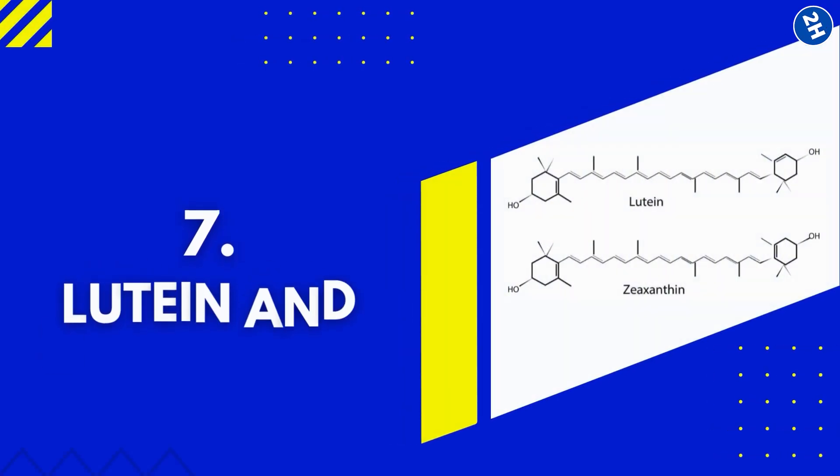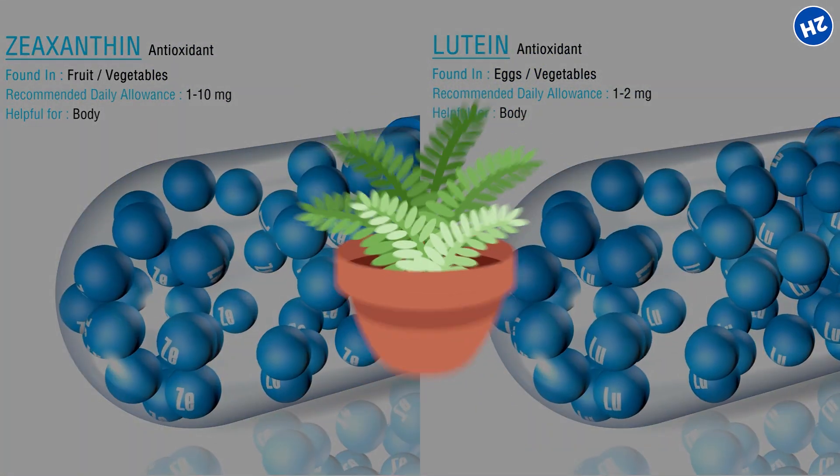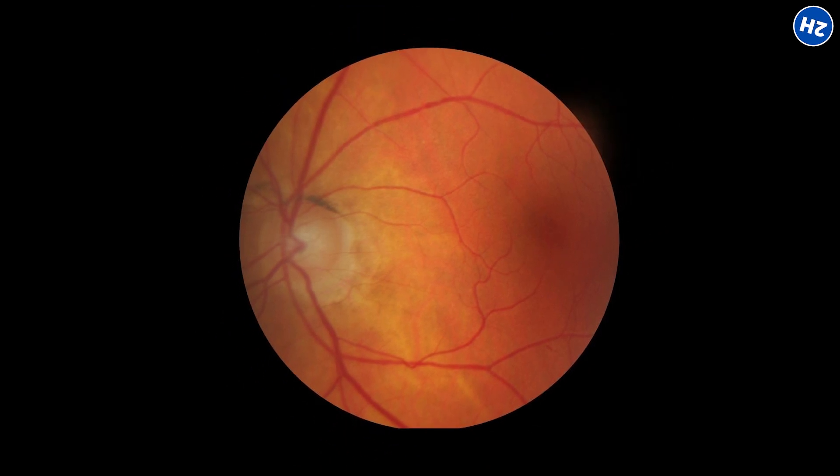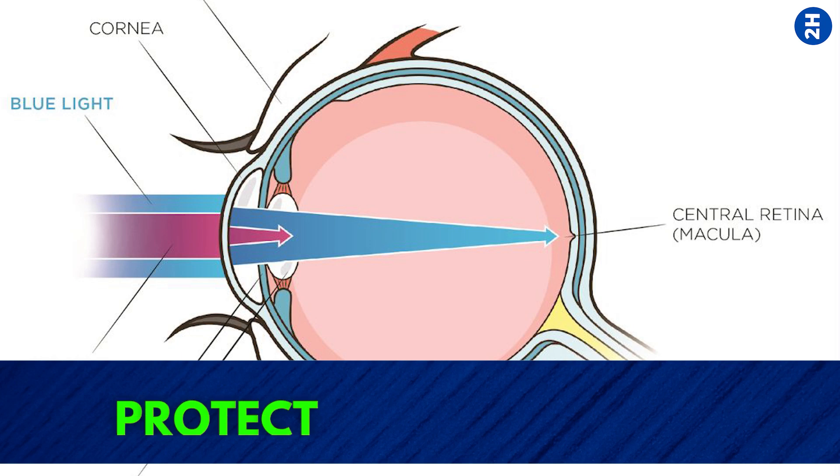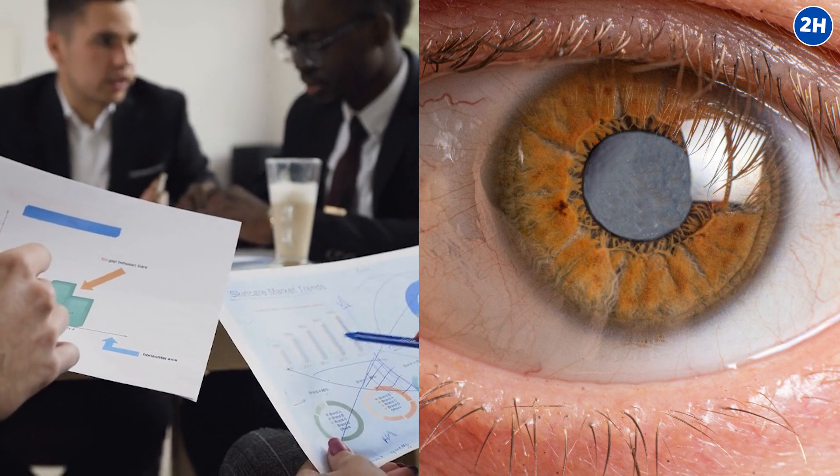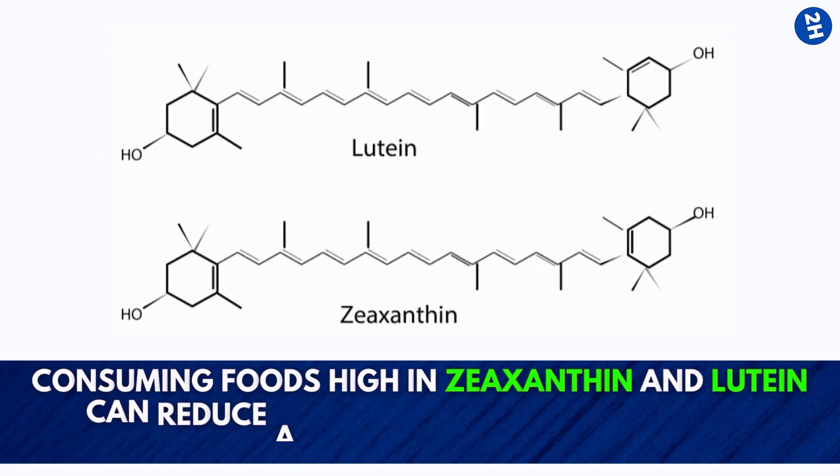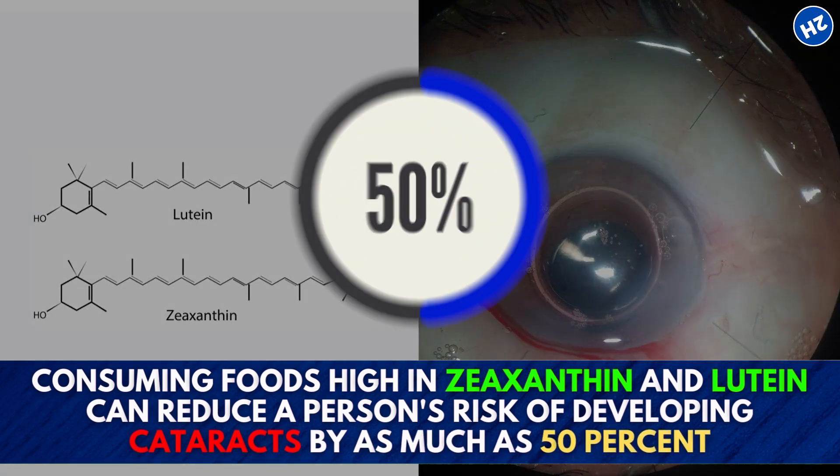Number 7. Lutein and zeaxanthin. Zeaxanthin and lutein are two of the beneficial compounds produced by plants. They can be found in the macula and retina of your eyes, and function to filter potentially harmful blue light and protect your eyes from damage. Studies also show their association with reducing cataract development and AMD progression.